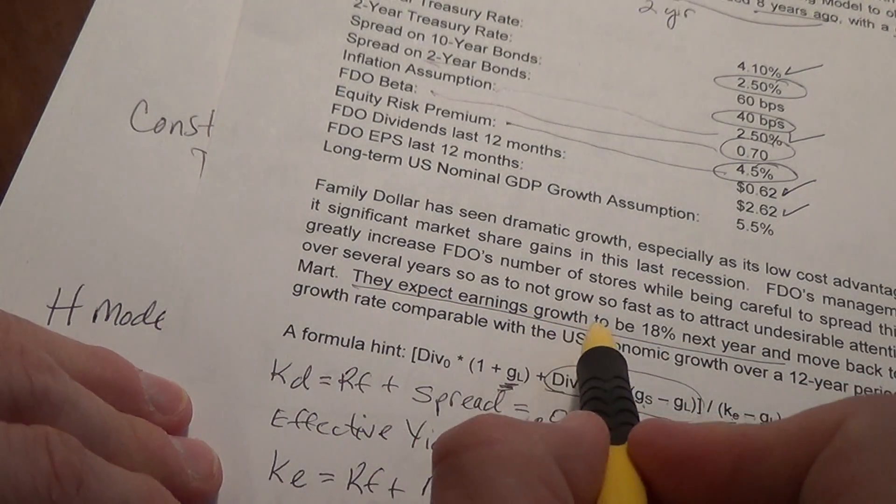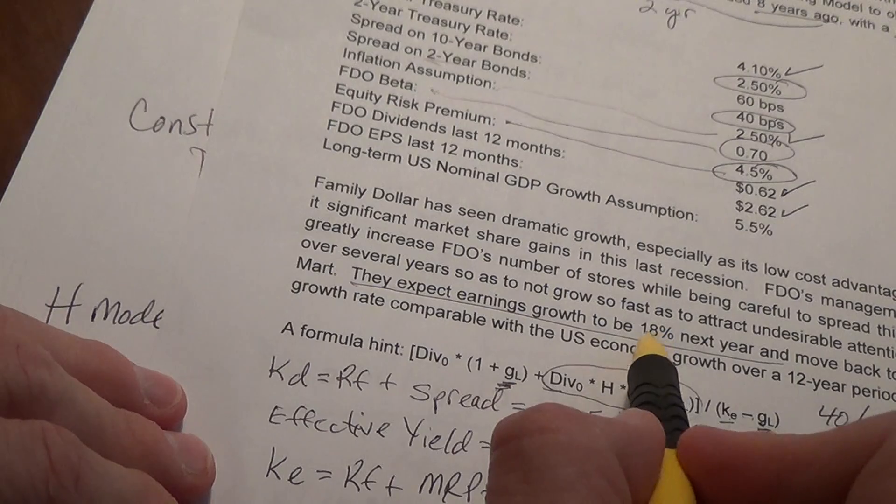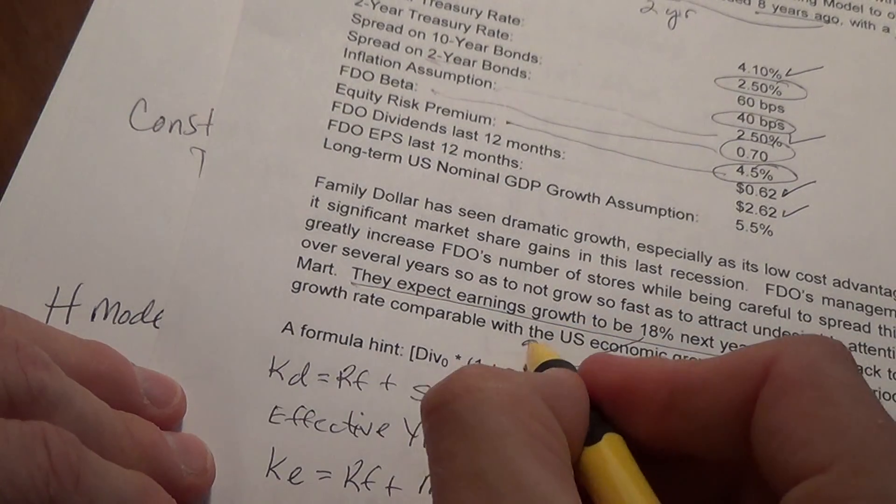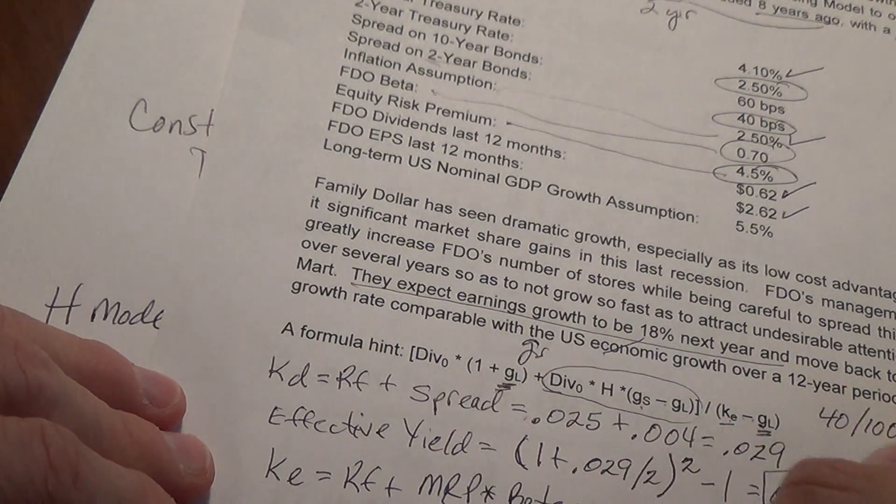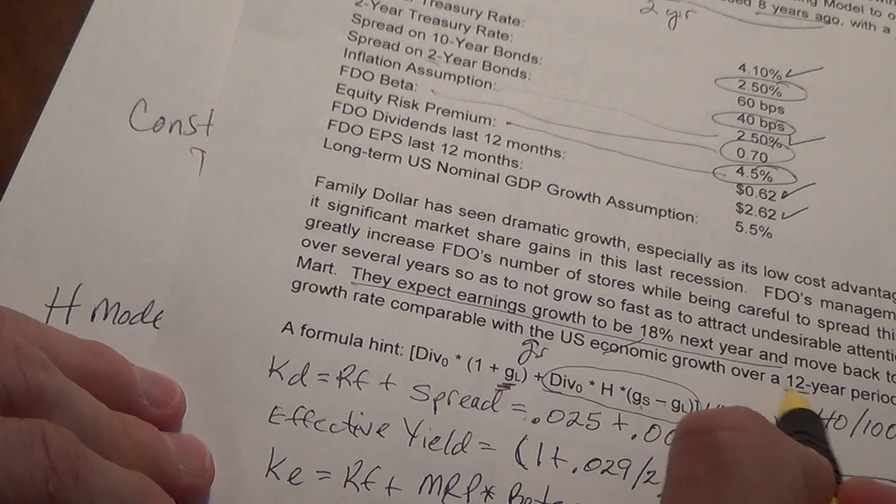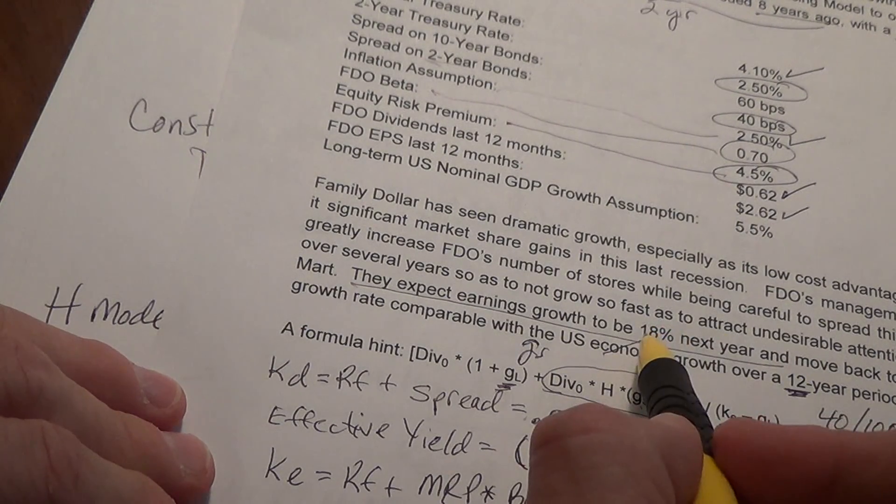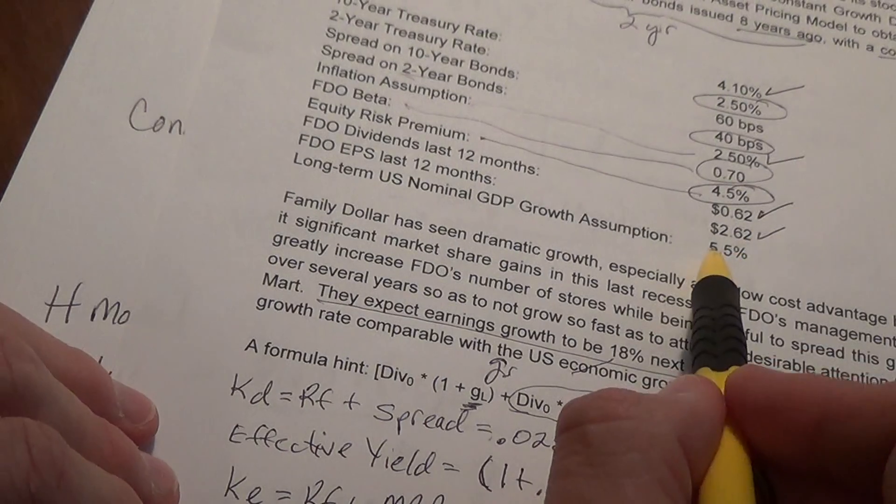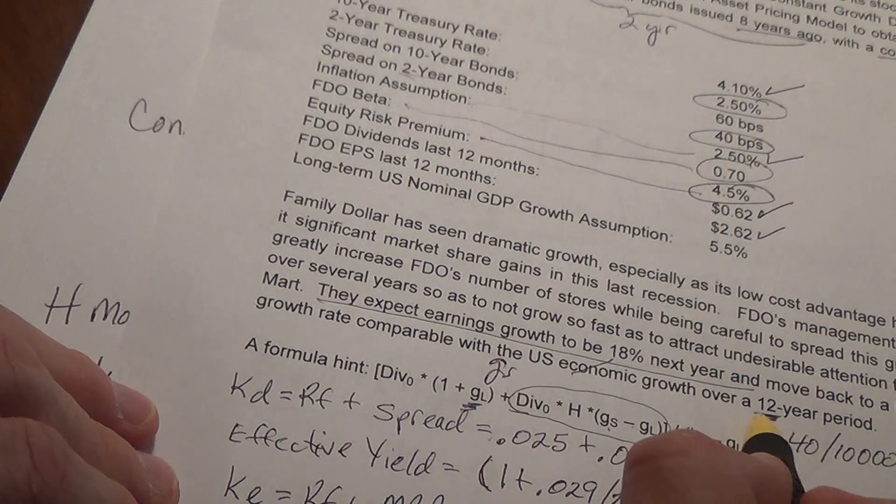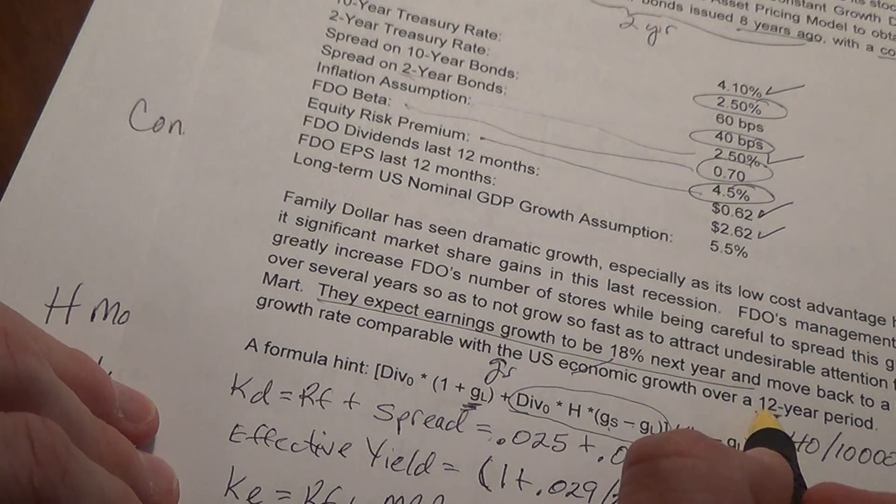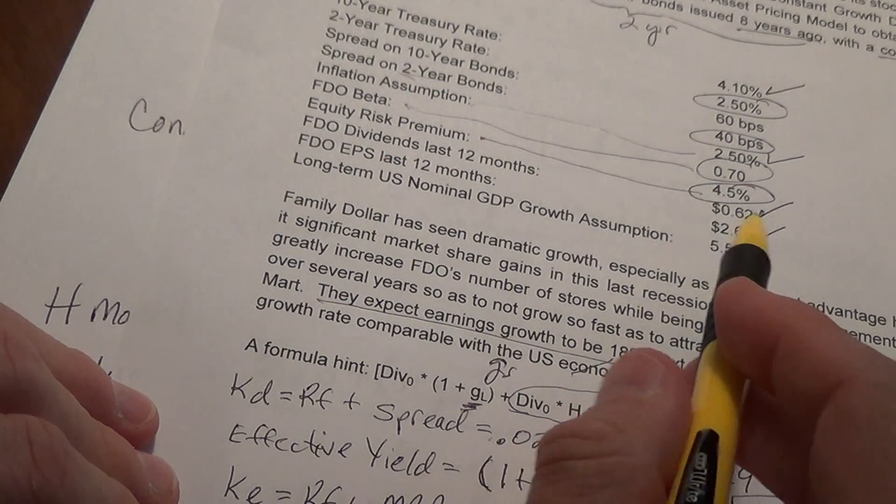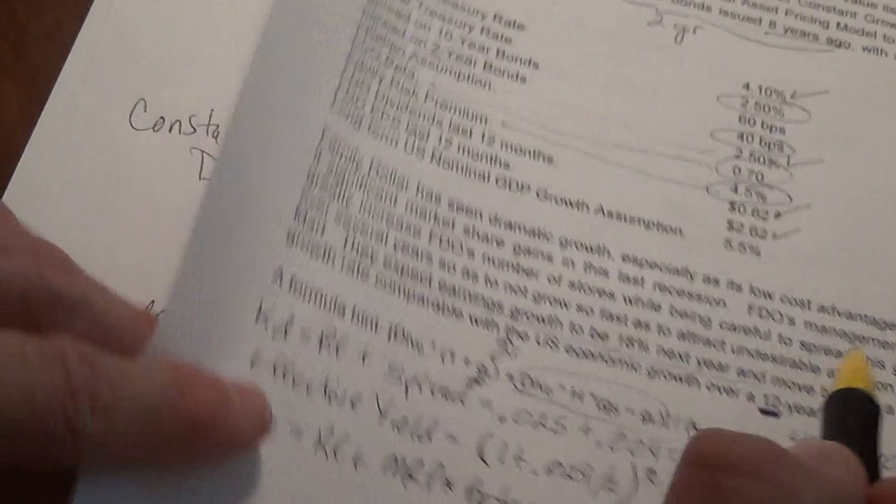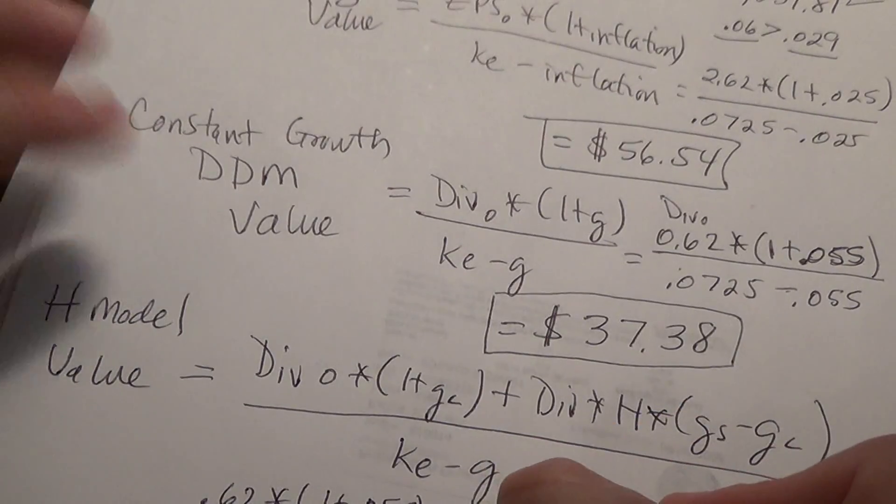They say they expect earnings growth to be 18% next year, so that's going to be your growth short term, and move back to long term growth rate over the next 12 years. So it's going to take 12 years to get from this 18% growth rate to the 5 and a half. Remember that H is one half of that period of time. So if it's 12 years to get from 18% to 5 and a half percent, then your H is 6.